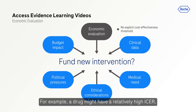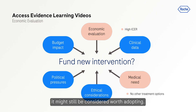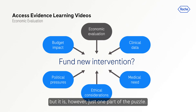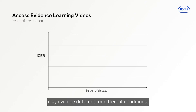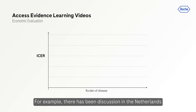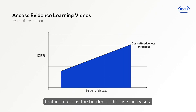For example, a drug might have a relatively high ICER, but if medical need is considered great — say, if no other treatment options are available — it might still be considered worth adopting. Economic evaluation is important in understanding the value of a product, but is just one part of the puzzle. What society is willing to pay for health improvements may even differ for different conditions. For example, there has been discussion in the Netherlands about having a range of cost-effectiveness thresholds that increase as burden of disease increases.